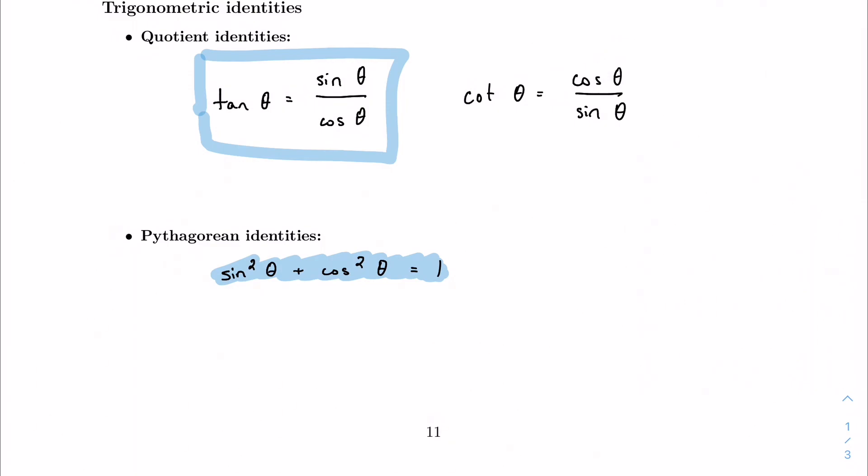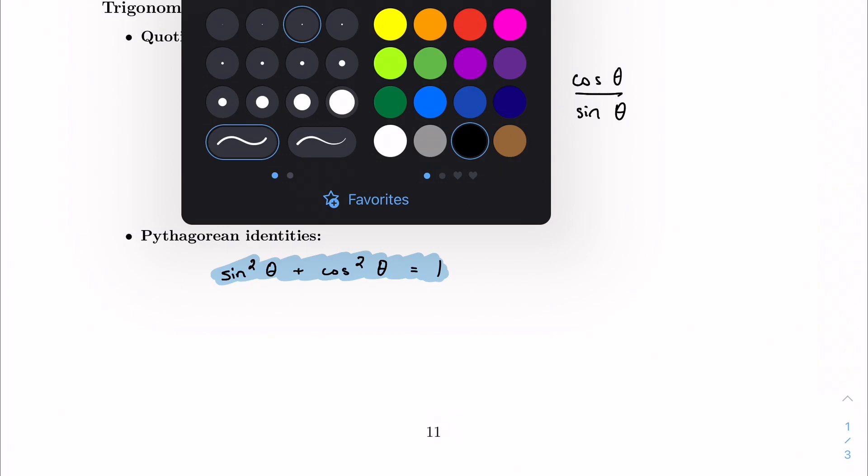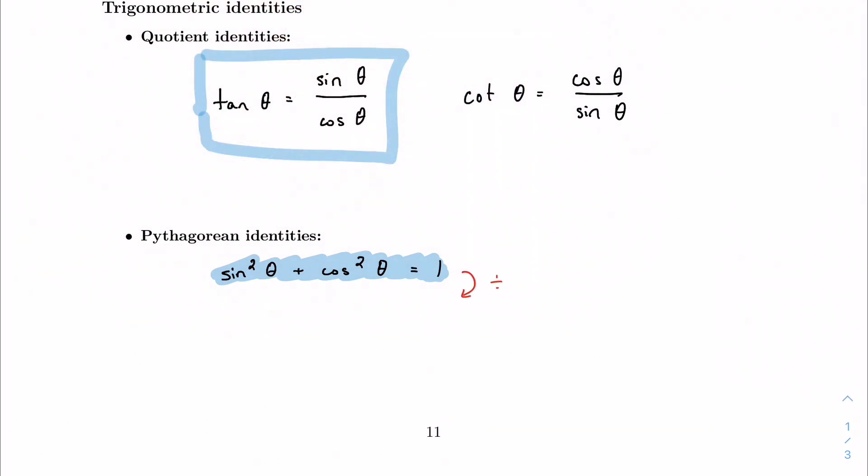We can derive two more if we think about trying to eliminate either sine or cosine. So if I were to divide everything through by sine squared, well, anything divided by itself is one. So sine squared divided by sine squared is one. Cosine squared divided by sine squared, well, cosine over sine is cotangent. So this is cotangent squared. And then one over sine is cosecant. So this is cosecant squared. So here's another Pythagorean identity.